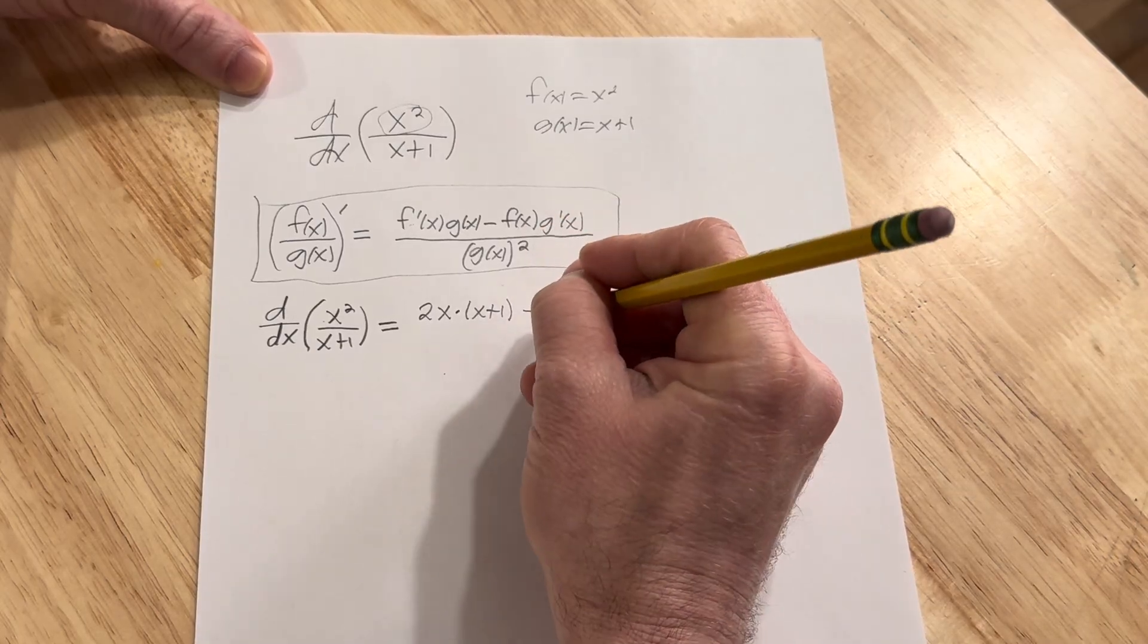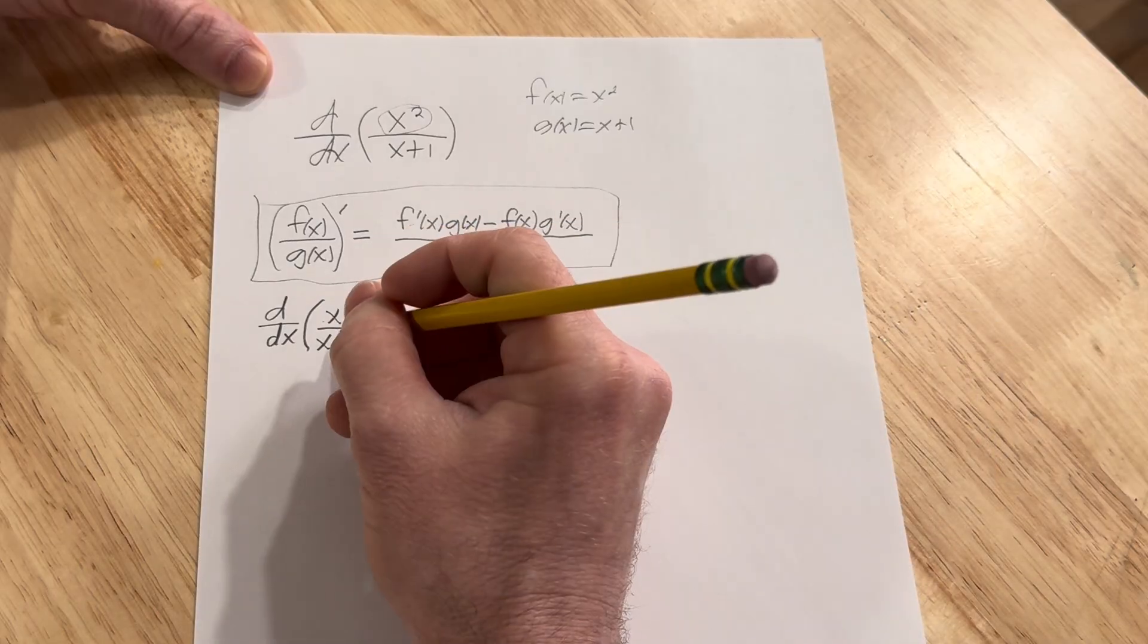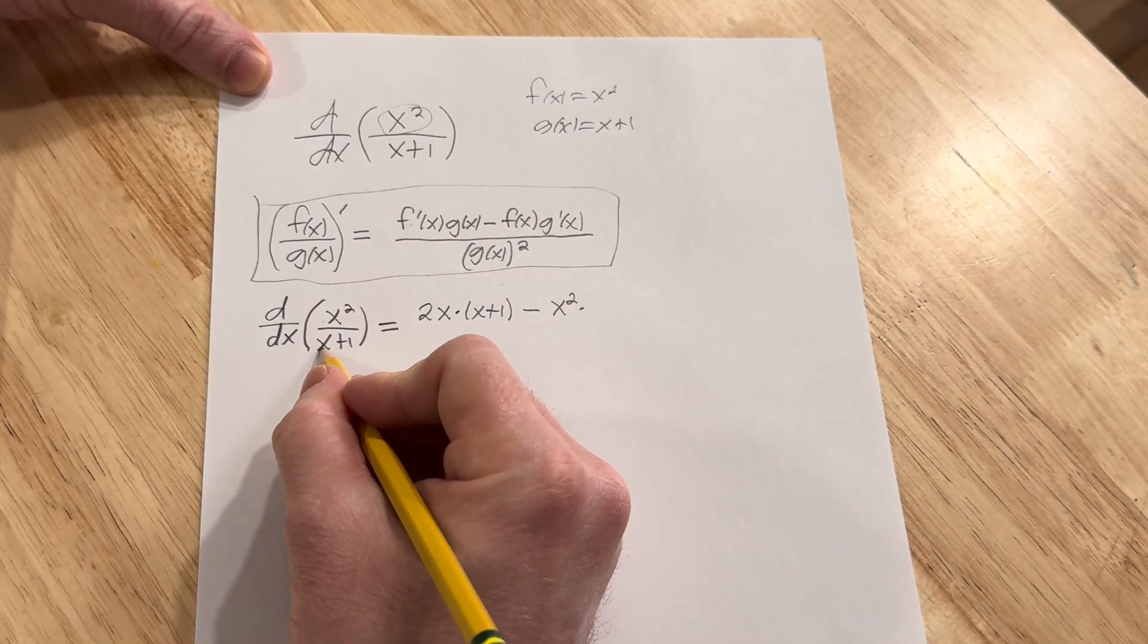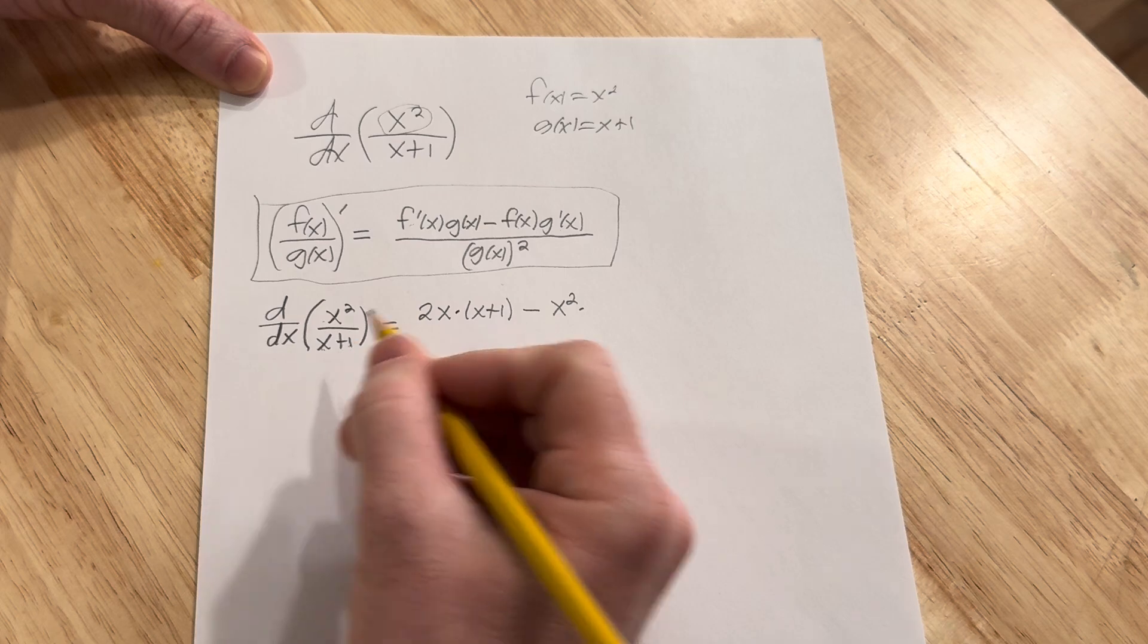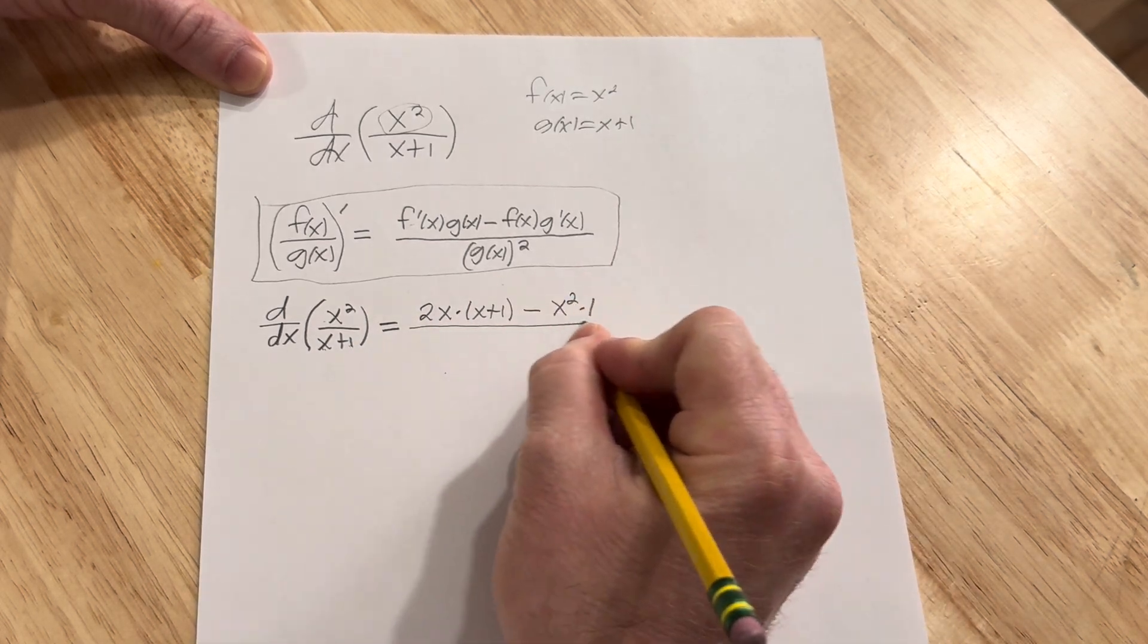Then minus the top, so x squared, times the derivative of the bottom, which is just going to be 1 because the derivative of x is 1 and the derivative of 1 is 0 because it's a constant. So it's just 1, all over the bottom squared.